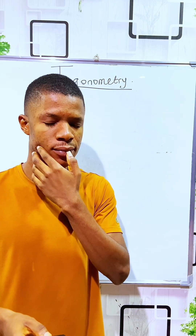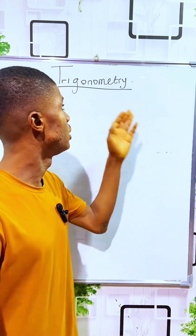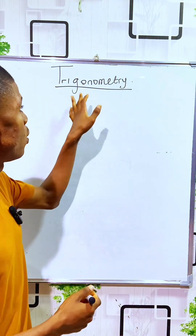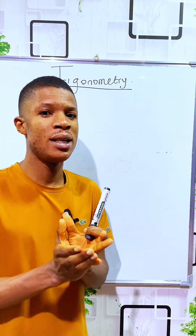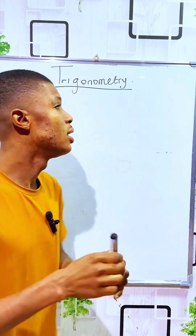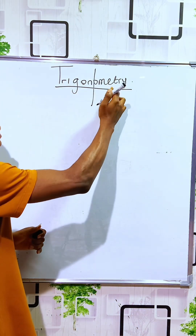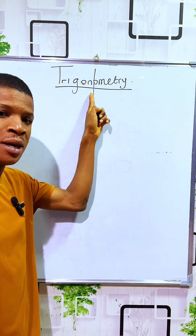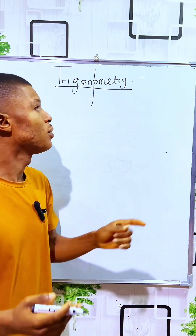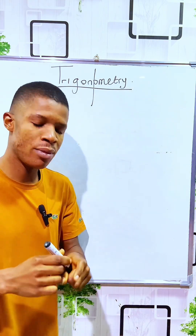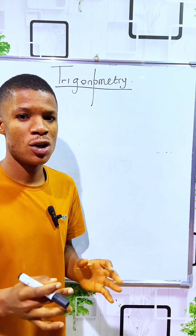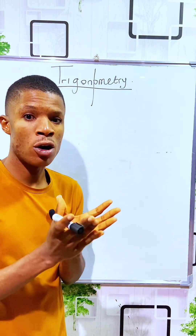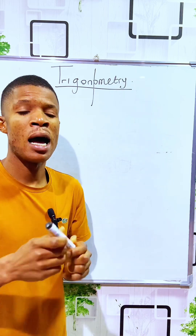Once you hear the word trigonometry, what do we actually mean? It is just a word formed by two important terms: 'trigono' and 'metric.' 'Trigono' means triangle, and 'metric' simply means measurement. So when you define trigonometry, it is just the study of triangles alongside the sides and the angles of the triangle.